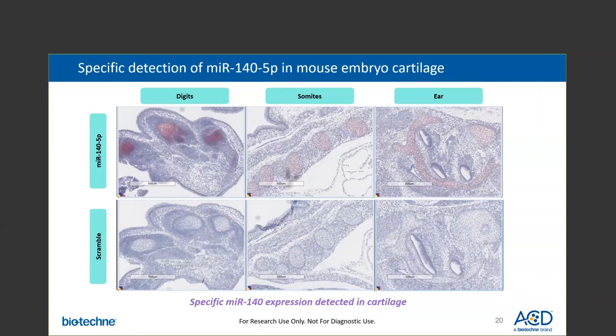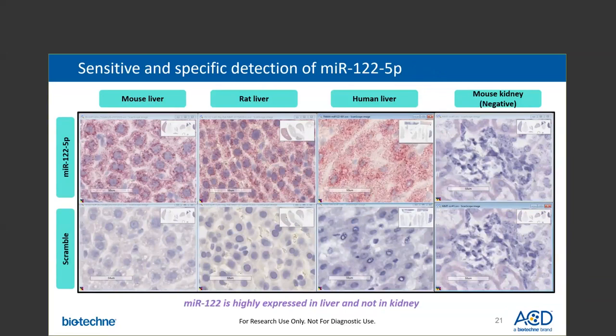Next, we have data showing the detection of microRNA-122 in different species samples. MicroRNA-122 is detected at high levels in liver samples from mouse, rat, and human. To show specificity, microRNA-122 was also stained in the negative control tissue — mouse kidney — showing no detection of the target. Scramble probe also shows no background detected.